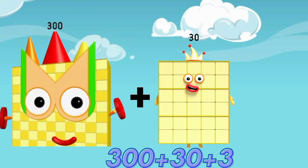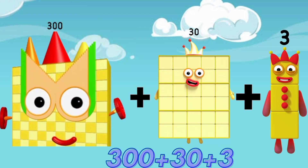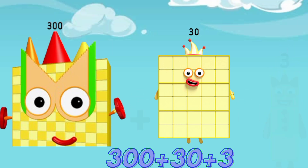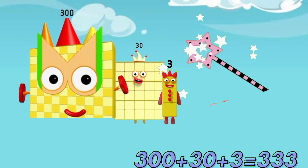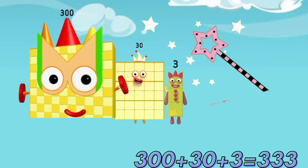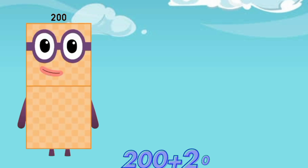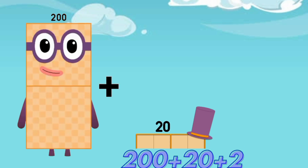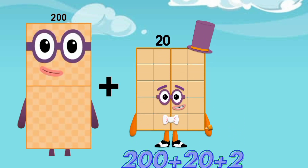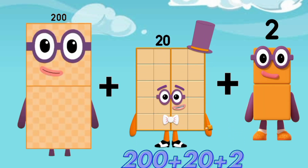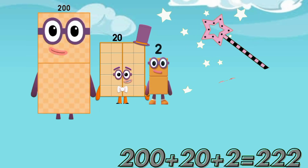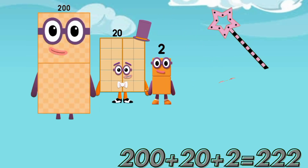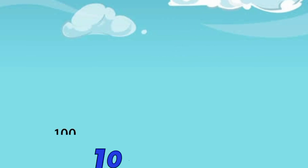Three hundred plus thirty plus three is equal to three hundred and thirty-three. Two hundred plus twenty plus two is equal to two hundred and twenty-two.